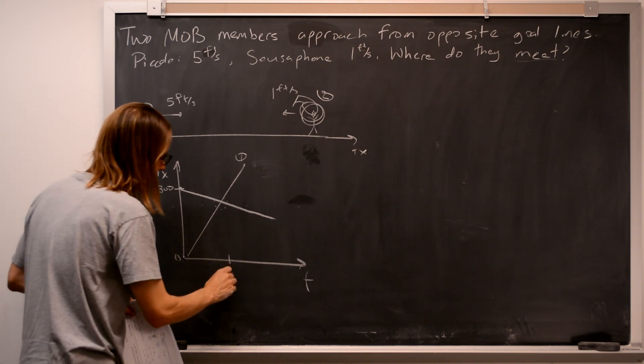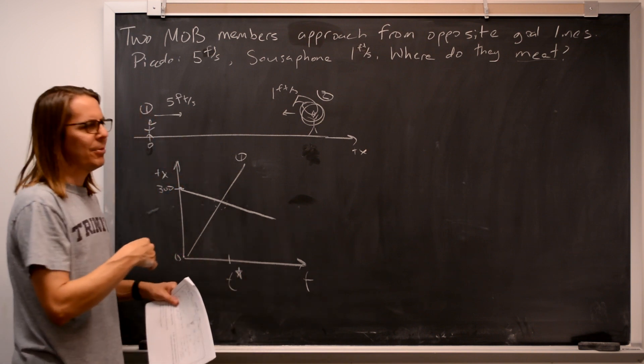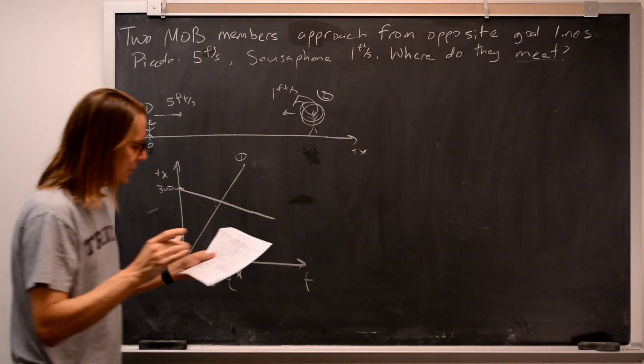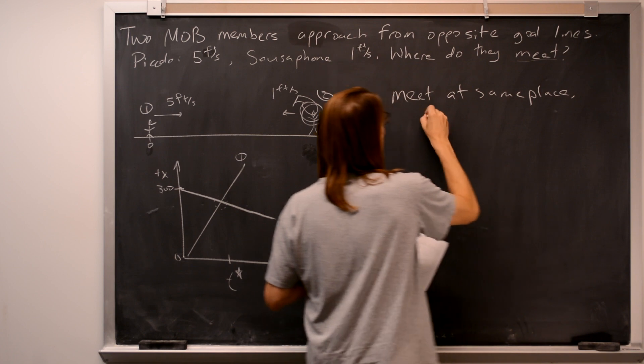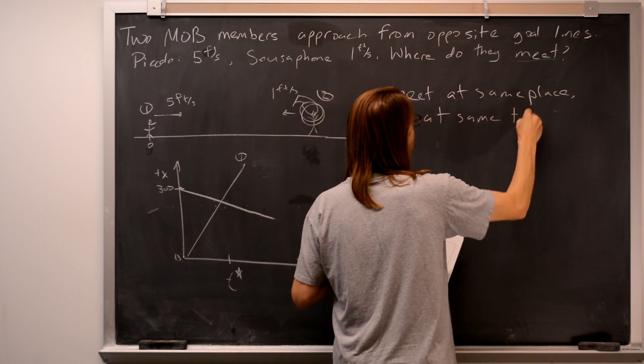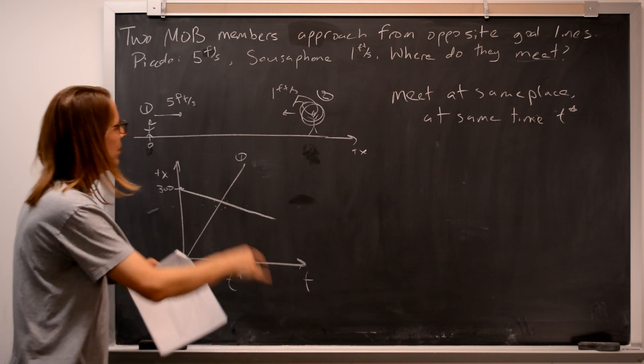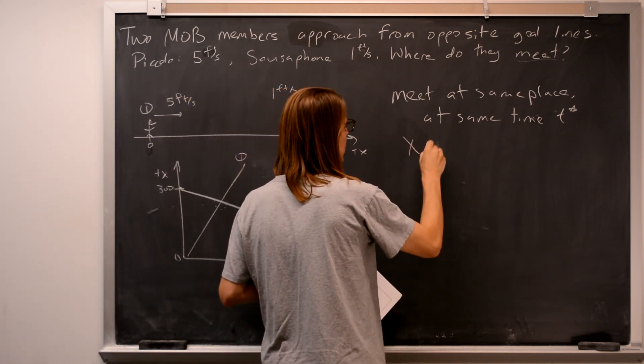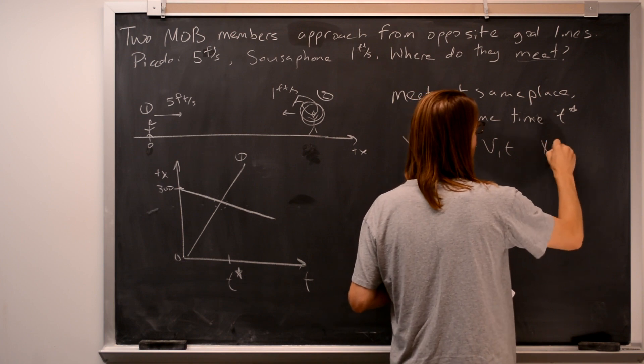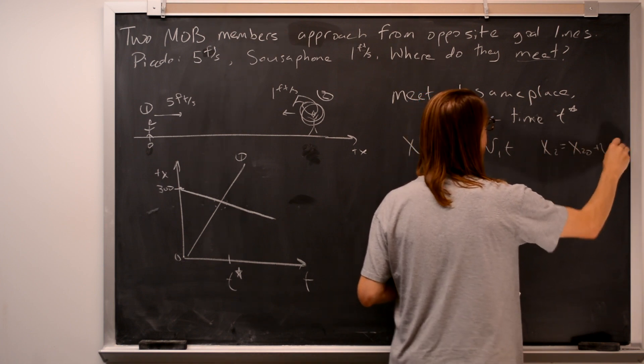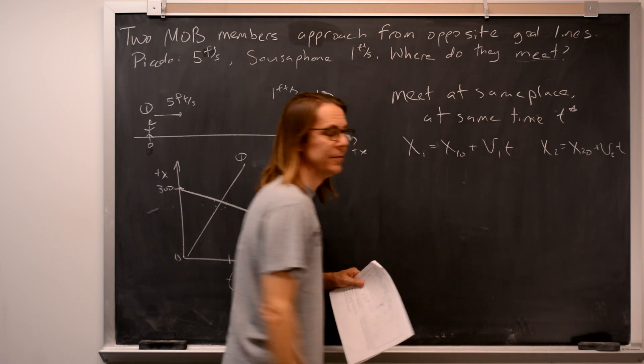So really, to get this problem started, you want to find that time when they meet. And I like to give it a little star. Just to remind yourself, I'm not solving something as a function of time. I'm looking for a specific time. Okay. So let's say they meet at the same place at the same time T star. So now let's get them in the same place.